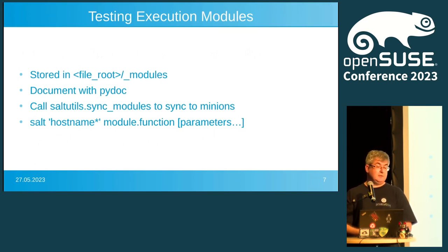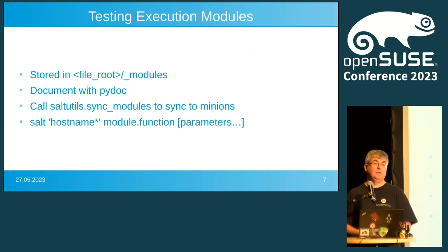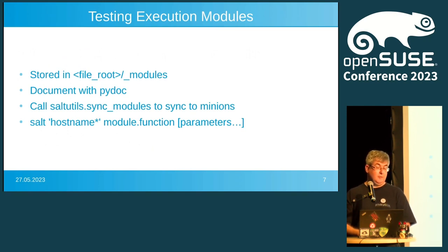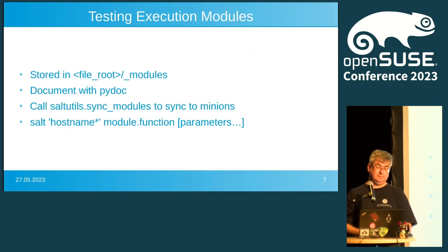The execution modules are stored somewhere in the file root under _modules — you can have more than one file root in the Salt configuration. The documentation is in PyDoc, which is really useful to get documentation at the command line, and the Salt project uses PyDoc to generate its web pages. Whenever you change an execution module on the Salt master you need to sync it to your minion — call salt utils sync_modules. The call is quite simple: the hostname you want to call, the module name dot function, and optional parameters as needed.